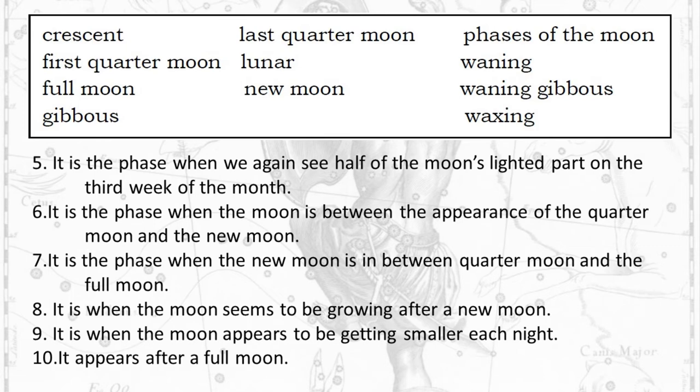6. It is the phase when the moon is between the appearance of the quarter moon and the new moon. 7. It is the phase when the new moon is in between the quarter moon and the full moon. 8. It is when the moon seems to be growing after a new moon. 9. It is when the moon appears to be getting smaller each night. 10. It appears after a full moon.